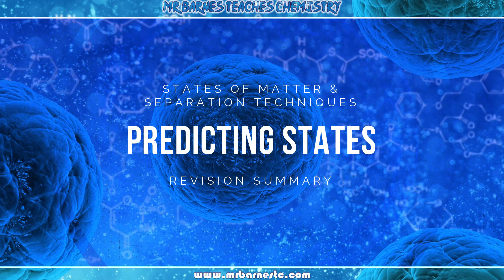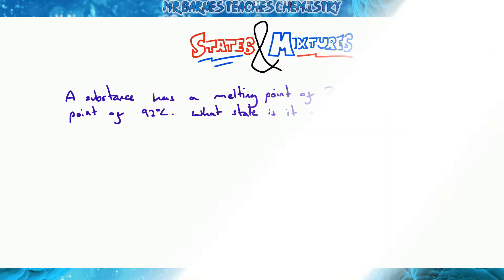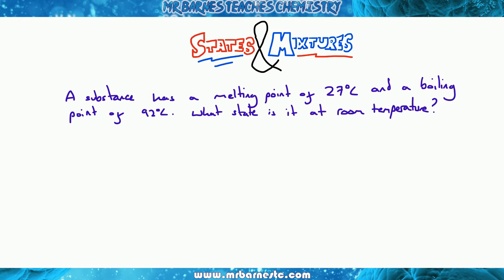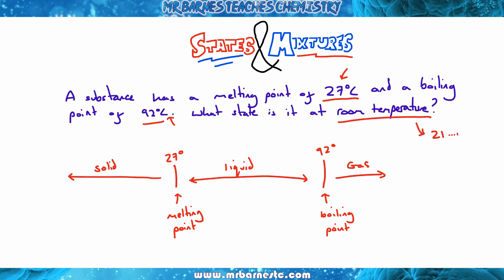The next section is how do you know what state any substance is when you're given the melting points and boiling points. A substance has a melting point of 27 degrees C and a boiling point of 92 degrees C. What state is it at room temperature? I draw out solid, liquid, and gas with lines between them. The left line is your melting point, 27 degrees. The right line is your boiling point, 92 degrees. Room temperature is usually around 21. So 21 is below 27 degrees, therefore it's a solid.